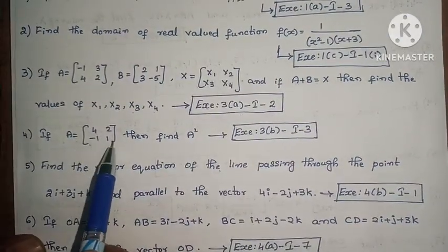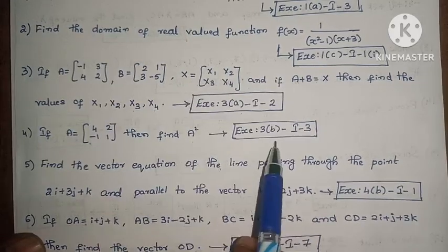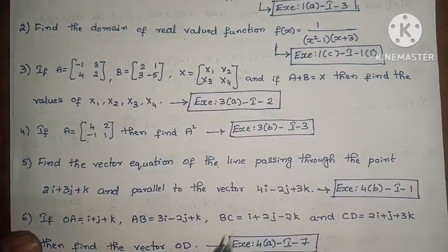Next, if A equals [4, 2, -1, 1], then find A squared. Exercise 3, First Roman, Third one.